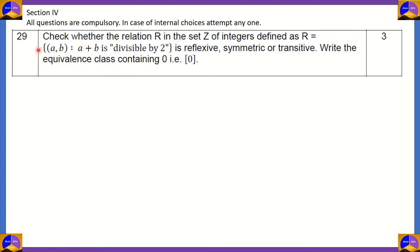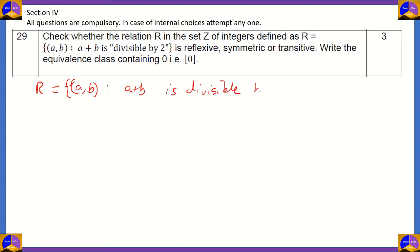The first question is Question 29: Check whether the relation R in the set Z of integers, defined as R = {(a, b) such that a + b is divisible by 2}, is reflexive, symmetric, or transitive. You also need to write the equivalence class containing 0 and prove that the relation is an equivalence relation. So let's write the relation: R = {(a, b) such that a + b is divisible by 2}.